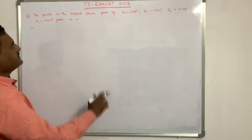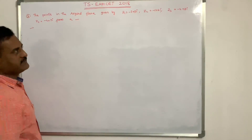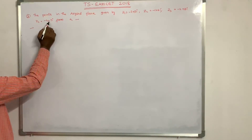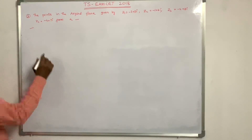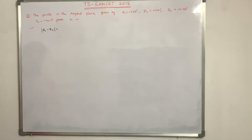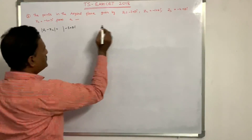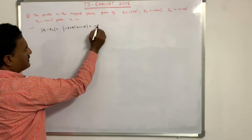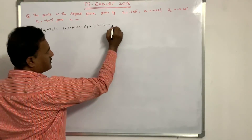Third problem: points in the Argand plane given by z1 equals minus 3 plus 5i, z2 equals minus 1 plus 6i, z3 equals minus 2 plus 8i, and z4 equals minus 4 plus 7i. Find what shape these points form. First, find modulus of z1 minus z2: (minus 3 plus 5i) minus (minus 1 plus 6i) equals minus 2 minus i, and the modulus equals under root of 4 plus 1, which is root 5.